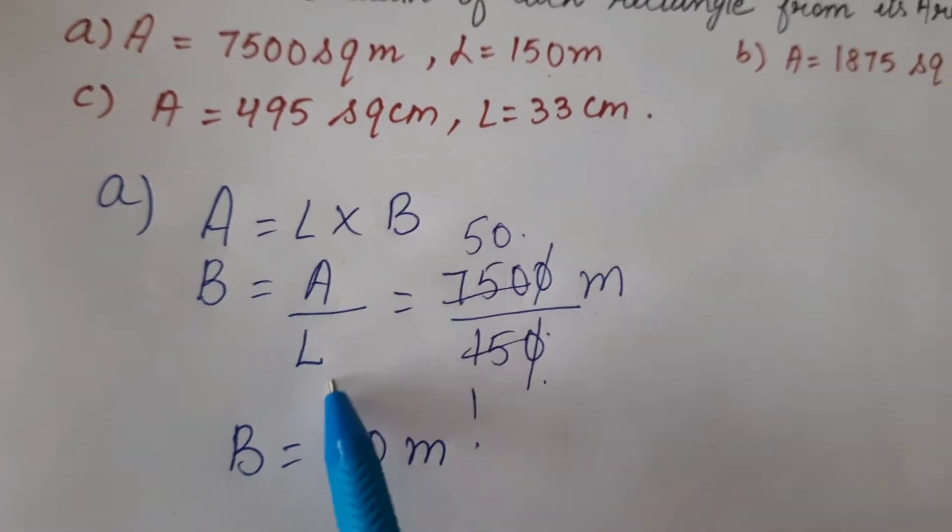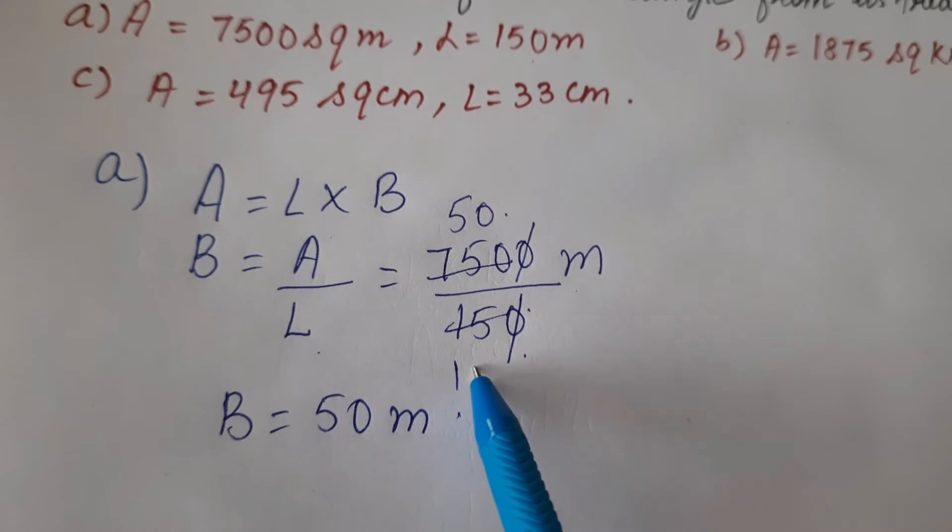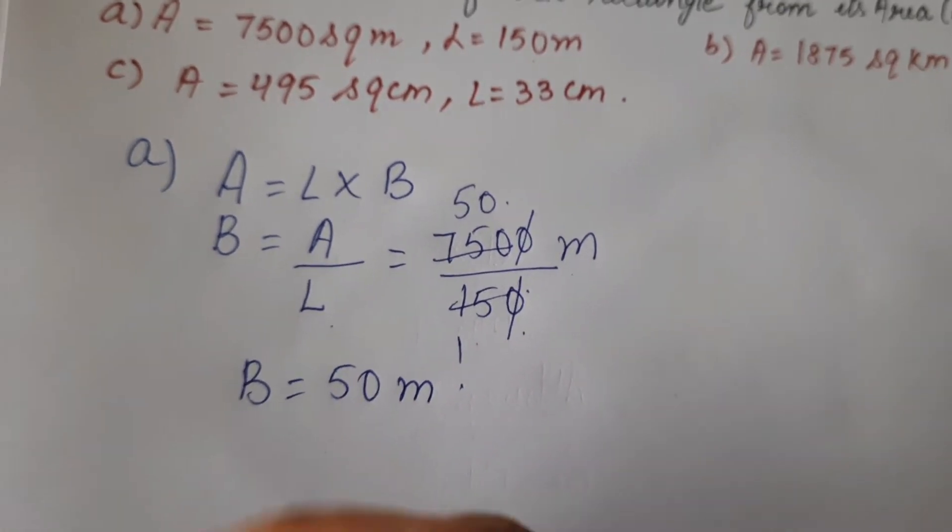What do we do? Breadth is area divided by length. Divide area by length to get the breadth.